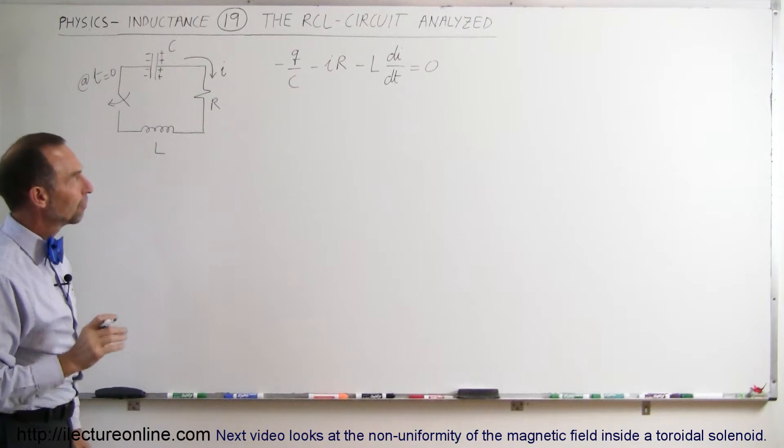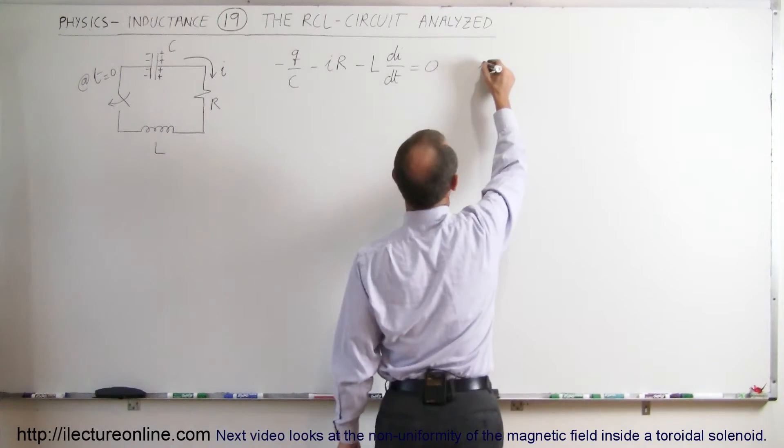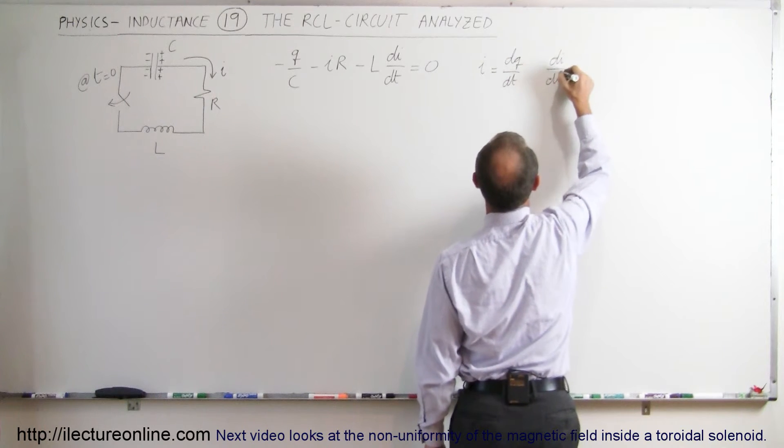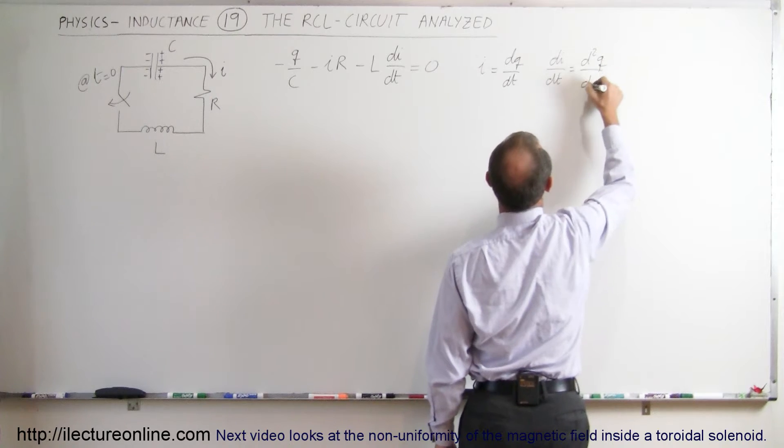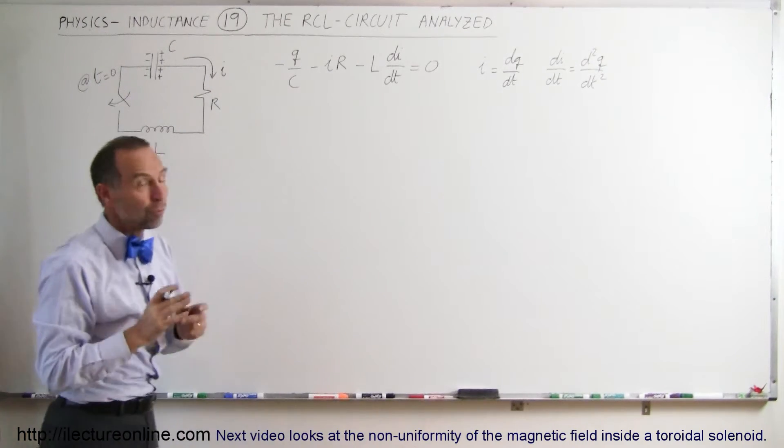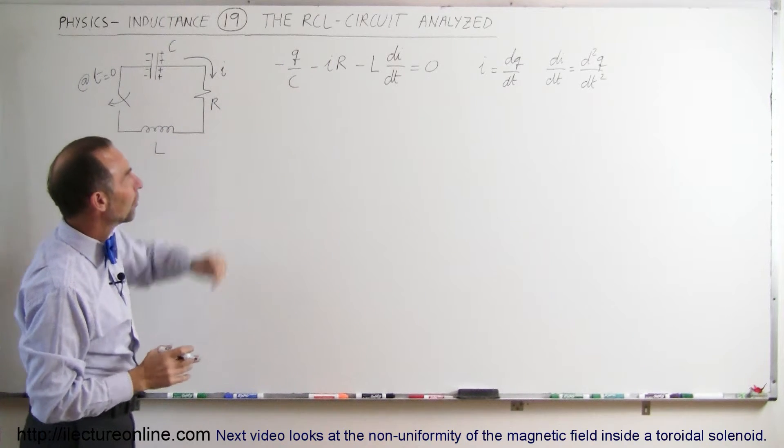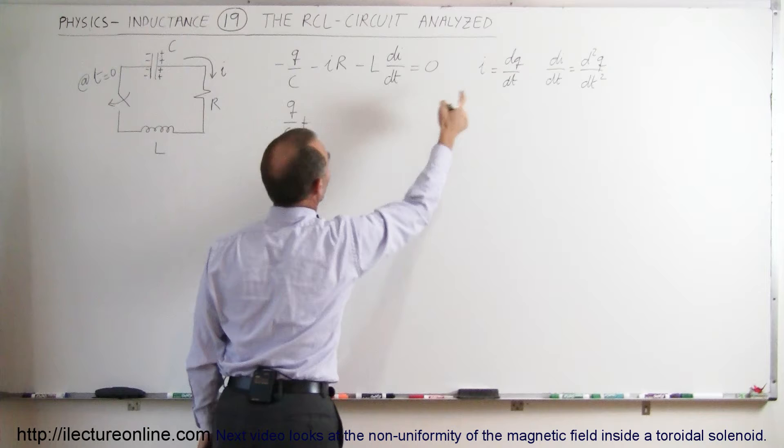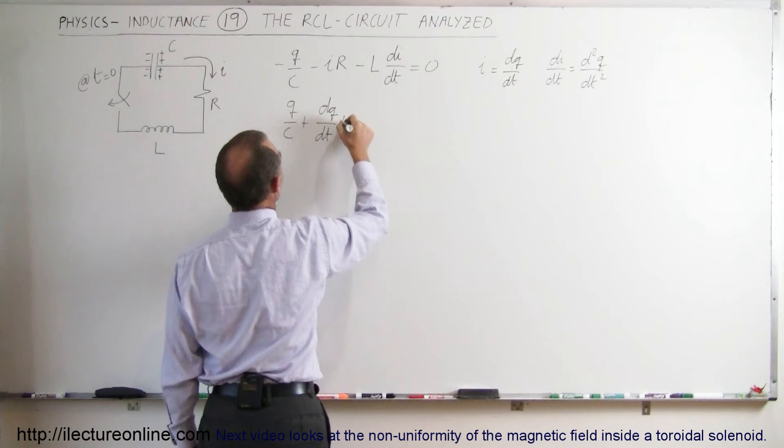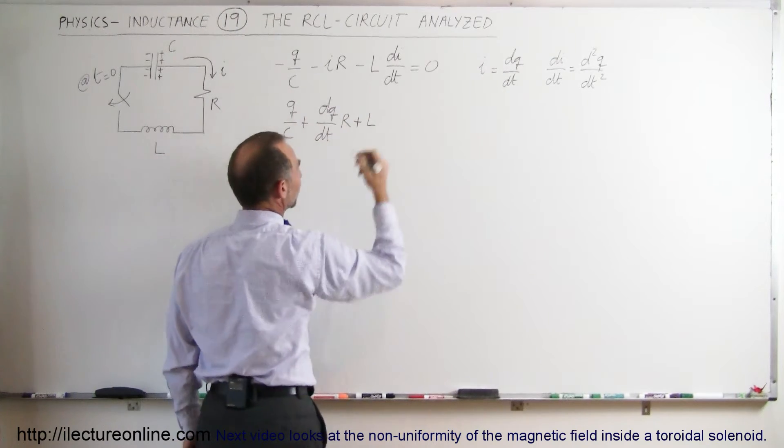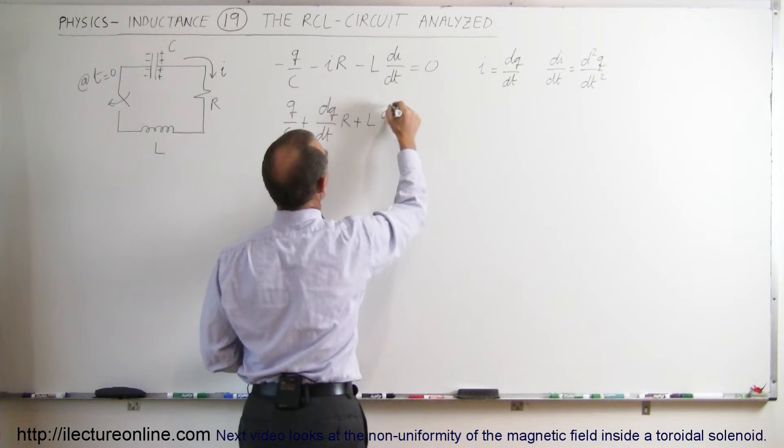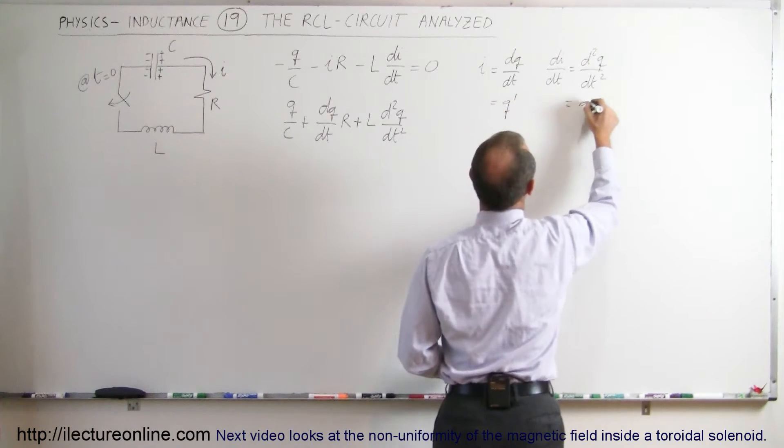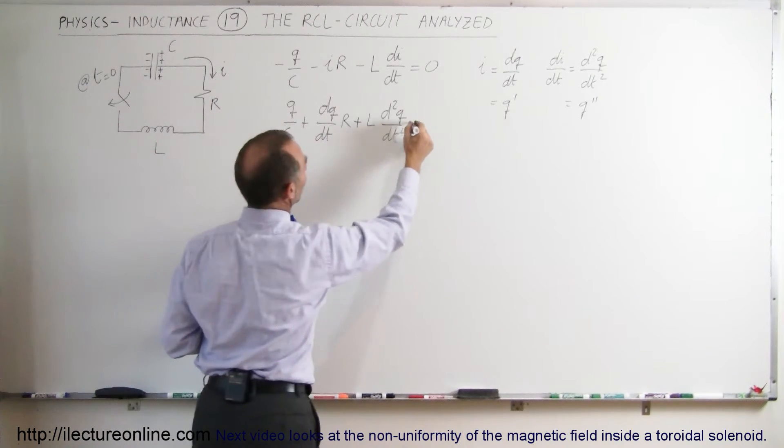So now we have to solve this equation. Before we do, we have to realize that the current i is equal to dq dt, and therefore di dt should be equal to the second derivative of the charge with respect to time. So we can make that substitution, and we can also multiply both sides of the equation by negative one to get rid of all the negative signs. So this then becomes a positive q over c plus dq dt times r plus l times the second derivative of q with respect to time. So if we let this equal to q prime and this equal to q double prime to make it easier, and then move things around, this is equal to zero.